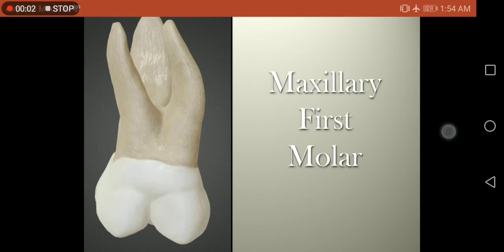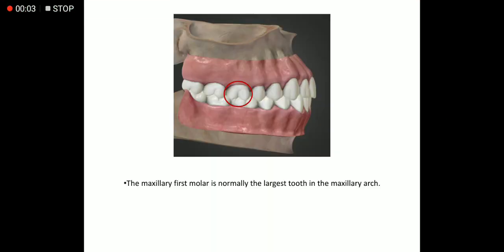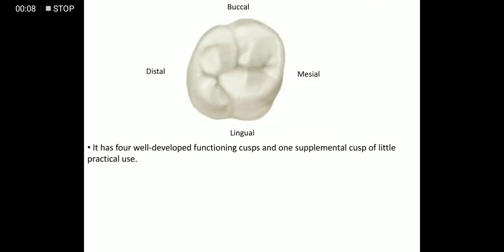Maxillary first molar. The maxillary first molar is normally the largest tooth in the maxillary arch. It has four well-developed functioning cusps and one supplemental cusp of little practical use.